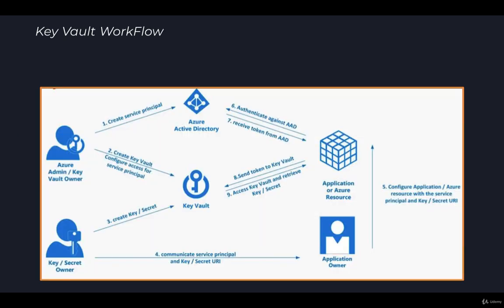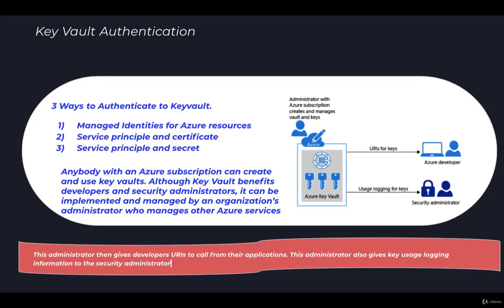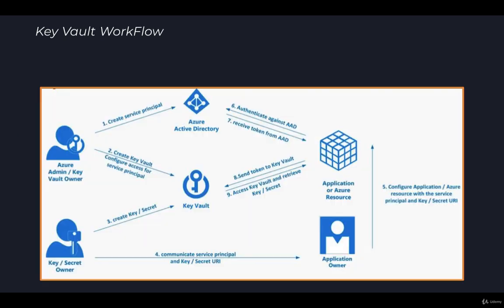Now we'll understand the workflow in more detail. The first step is that the admin or Key Vault owner creates a service principal within Azure Active Directory. The second step is creating a Key Vault and configuring access for that particular service principal, so that the user or application — such as a web app — is provided access to this particular Key Vault.